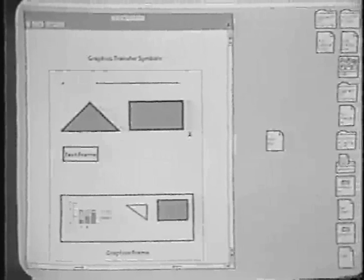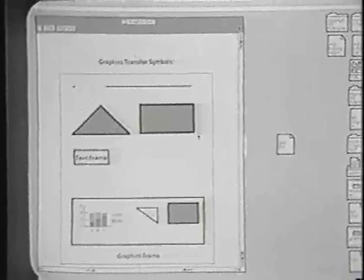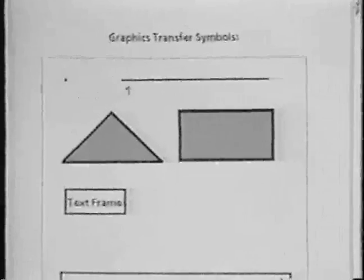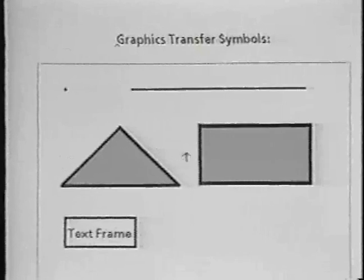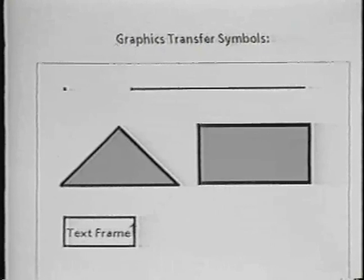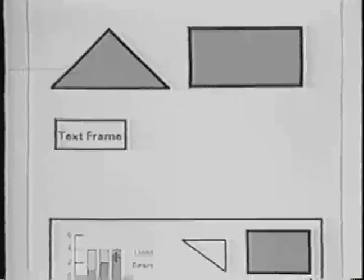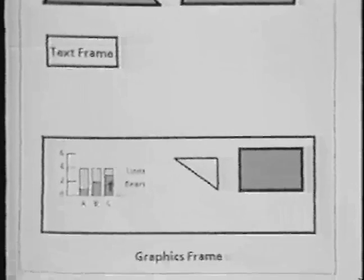This particular document happens to contain examples of the basic graphics transfer symbols. These symbols include points, lines, triangles, rectangles, text frames, and down here we have a graphics frame that contains the other basic graphics transfer symbol, the chart.